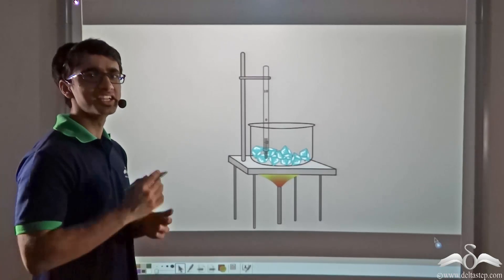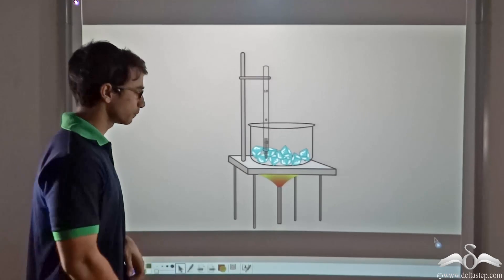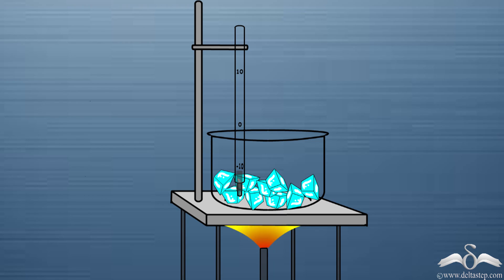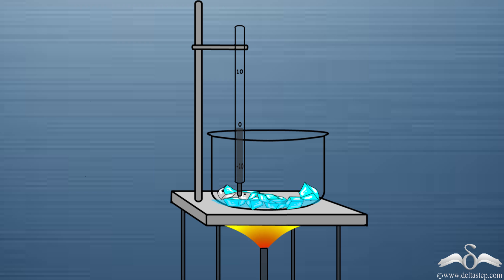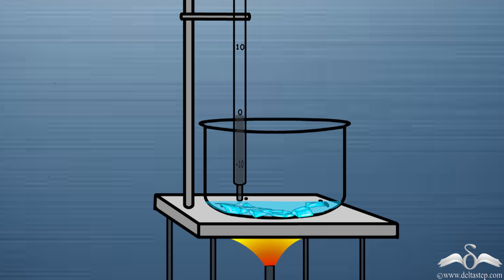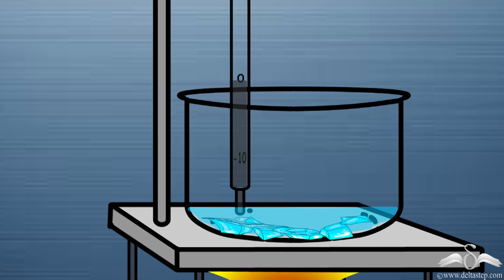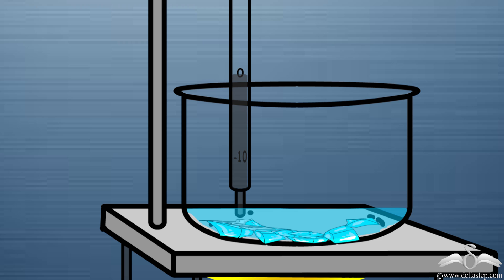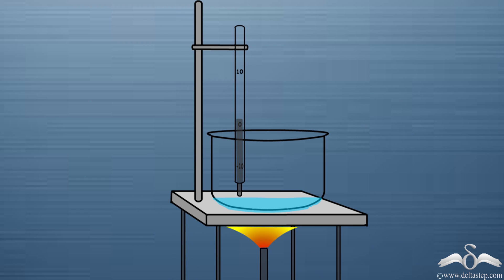Let us take a look at a very intriguing video. Over here you will find that a number of ice cubes have been kept inside a beaker. Now it is being heated constantly, but as you can see, the temperature of the ice cubes is not changing unless and until the entire ice is getting melted and converted to water. Only after the entire thing melts does the temperature rise. So why do you think this is happening?